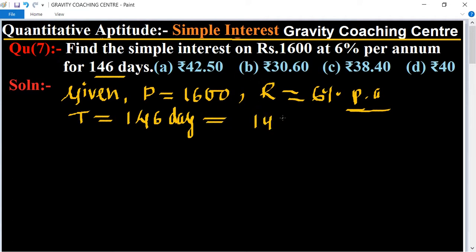Both annum cancel. By table of 73, so 73 and 5, equal to 2 upon 5 years. Therefore simple interest equals...